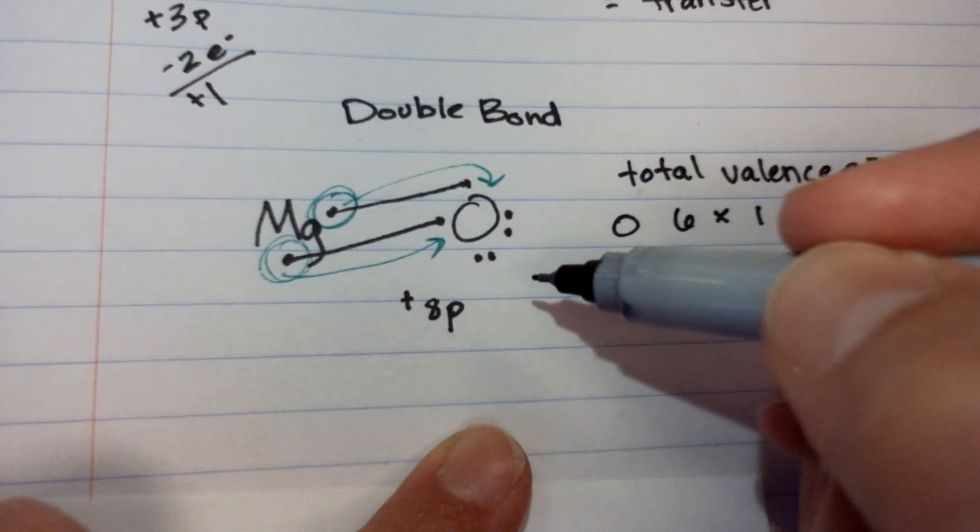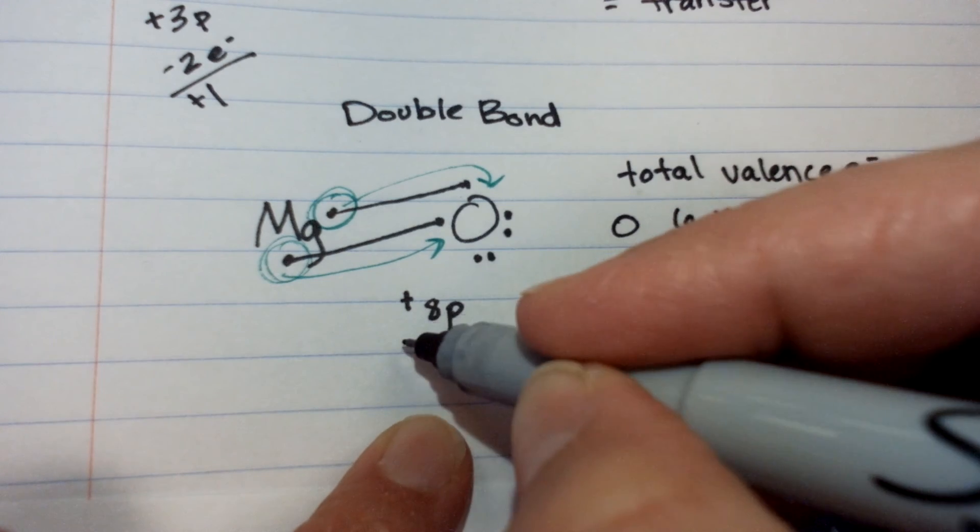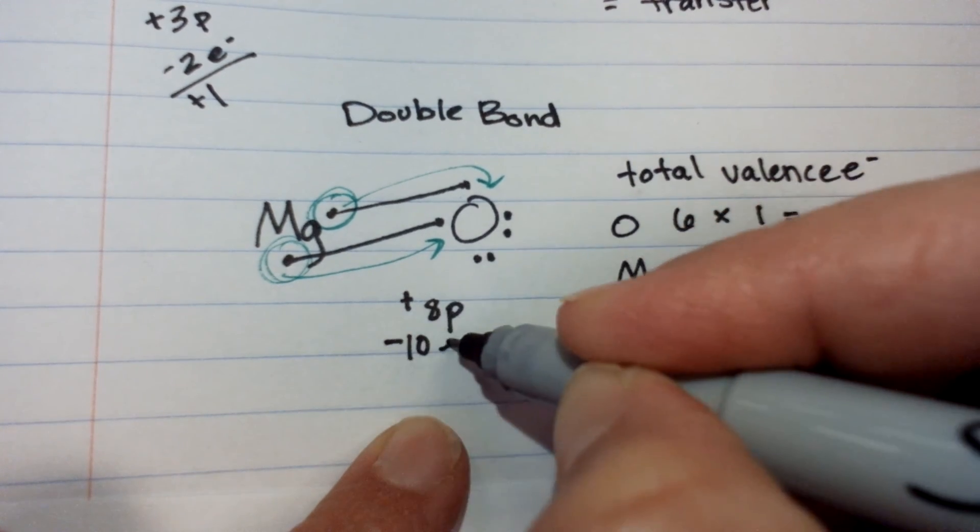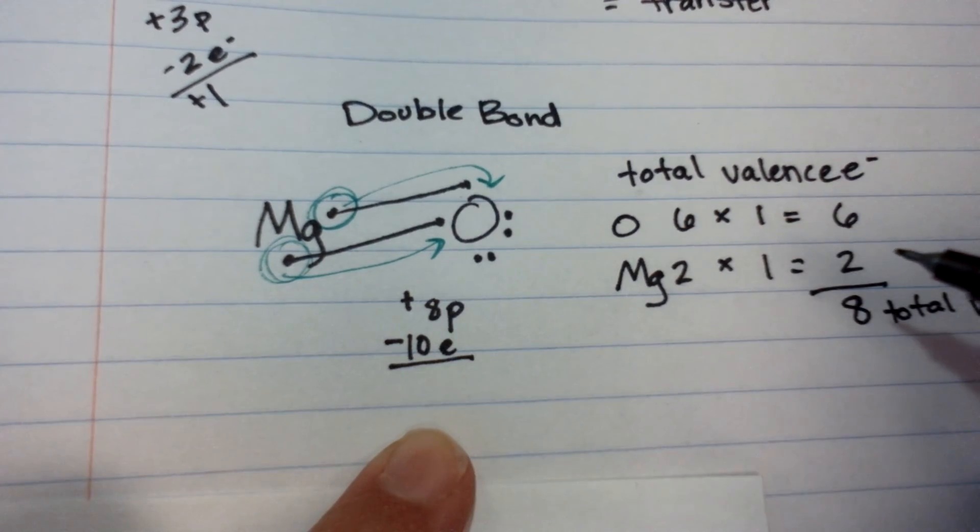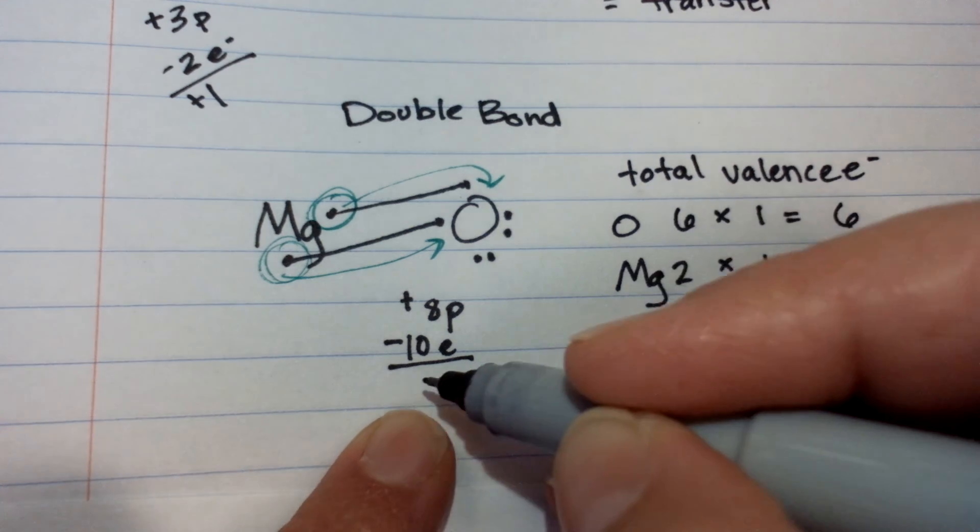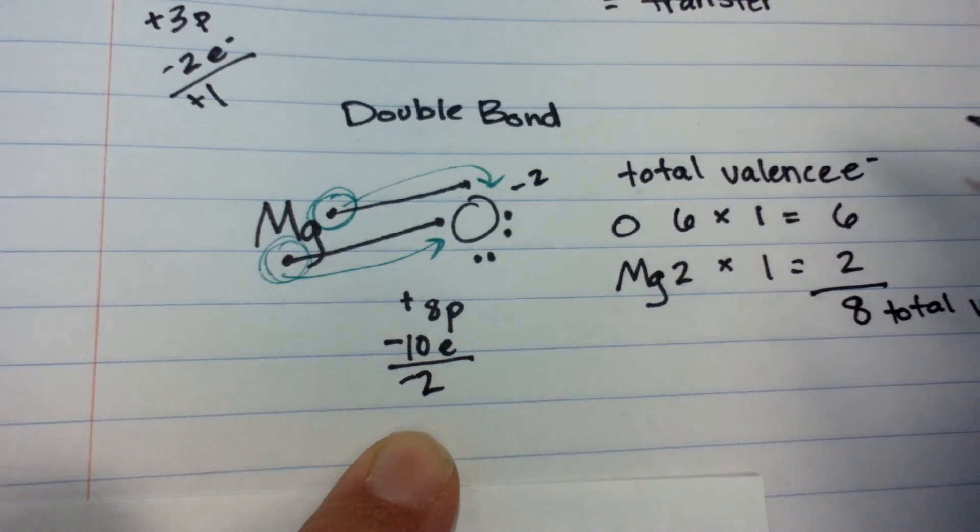But, we now have, instead of 8, we have 10 electrons. So, what's the charge on oxygen? Negative 2. So, oxygen gets a negative 2 charge.